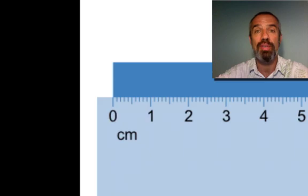One of the first things you always want to do is make sure that's lined up with the zero. The one end of the object you're measuring is lined up with the zero.